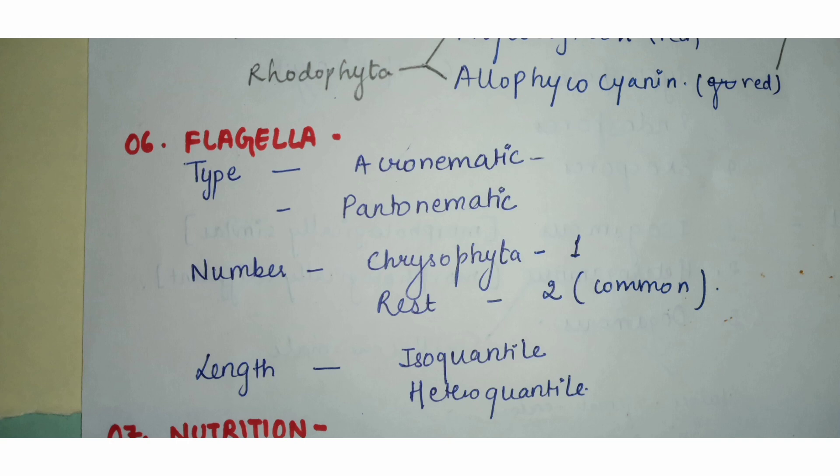Flagella are classified on several sub-bases. According to type, there is acronematic or pantonematic. Acronematic means a whiplash-like structure — it is very tapering and smooth on its surface. Pantonematic flagella are similar but have hair-like outgrowths on their surface.